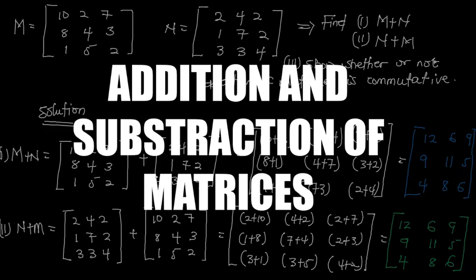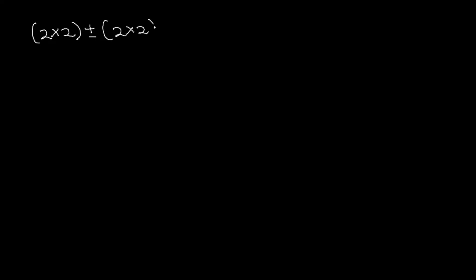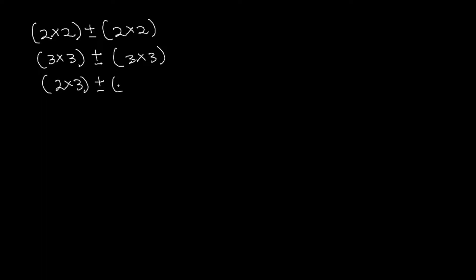So let's begin. For us to be able to add a matrix, we need to make sure the order of the matrices are the same. What I mean by this is that we can add or subtract a 2×2 matrix to another 2×2 matrix — that is allowed. We can add a 3×3 matrix or subtract it from another 3×3 matrix. The same way we can add a 2×3 matrix or subtract it from another 2×3 matrix. Once the order of the matrix is the same, we can add or subtract them.